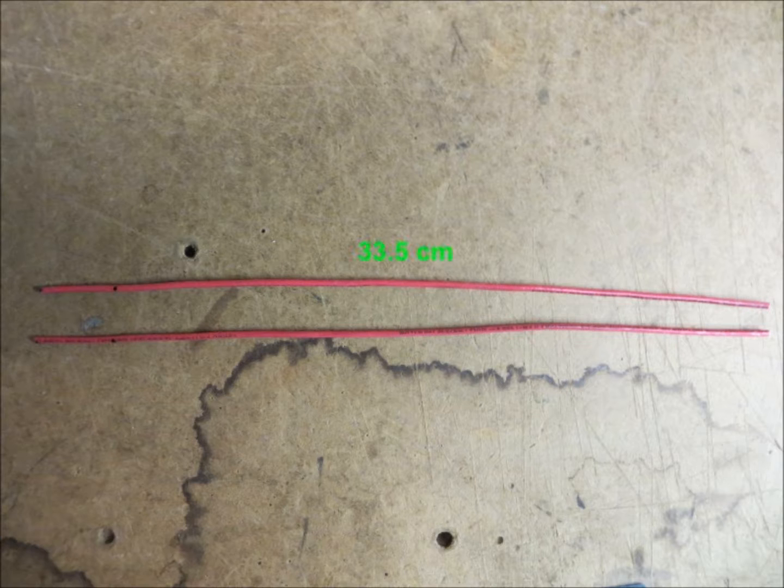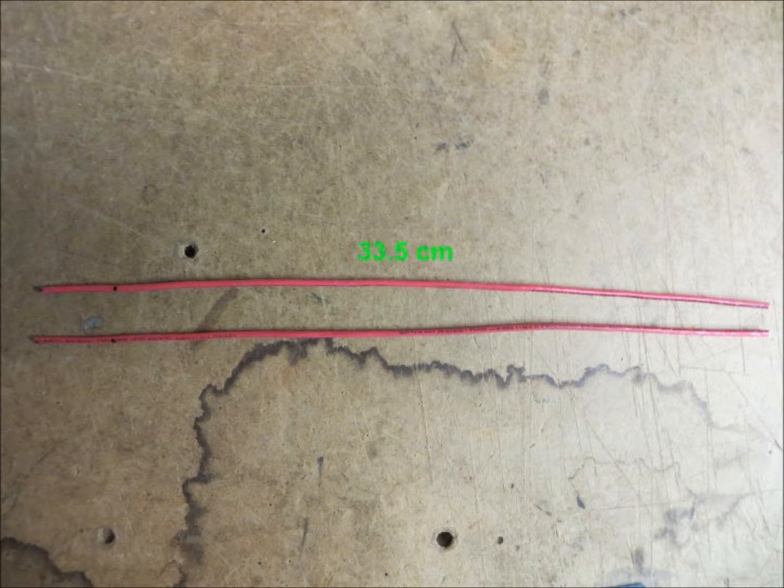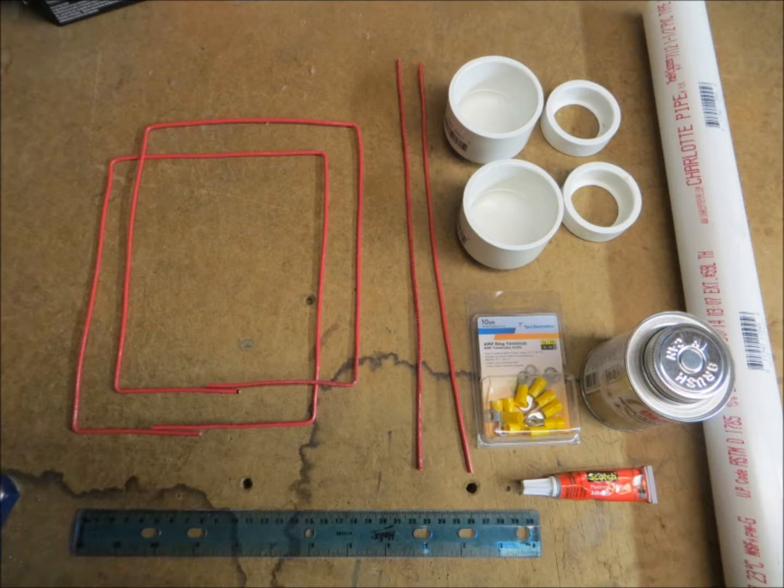Next, I measured out the two wires for the reflectors. These would each need to be 33.5 centimeters long. After that, it was time to start assembling the antenna.